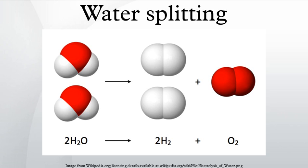Nuclear radiation routinely breaks water bonds. In the Mponeng Gold Mine, South Africa, research has found in a naturally high radiation zone a community dominated by a new type of Desulfotomaculum, feeding primarily on radiolytically produced H2. Spent nuclear fuel and nuclear waste are also being looked at as a potential source of hydrogen.